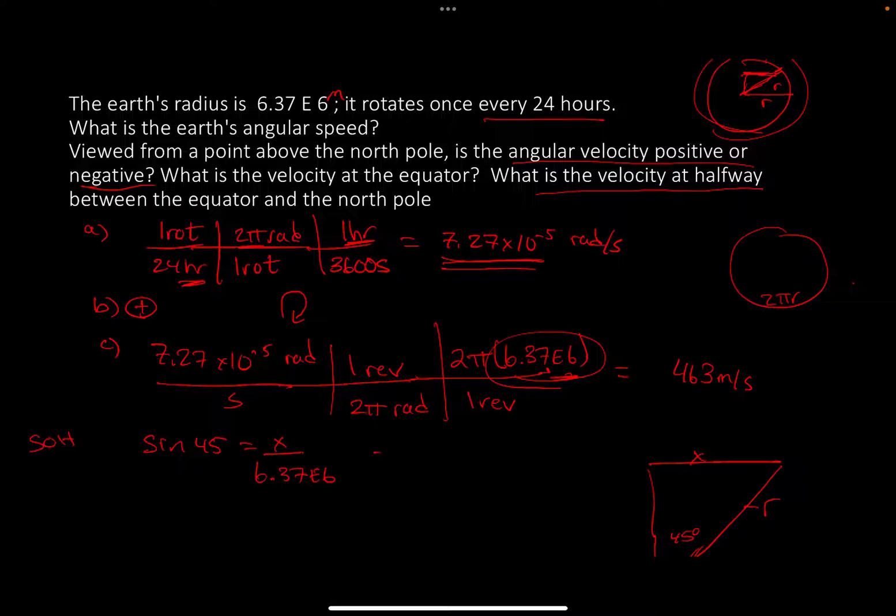I get 4.5 times 10 to the 6 meters. So when the Earth is rotating at 45 degrees, this distance from here to here is this number right here, this many meters. And then to find the speed, if you're standing at that portion of the Earth, you're going to do the exact same math we did here, except instead of using the 6.37, you're going to use 4.5 times 10 to the 6, and I end up with 327 meters per second. That's the answer to D.